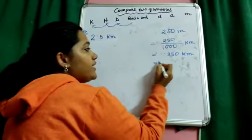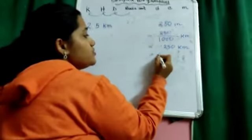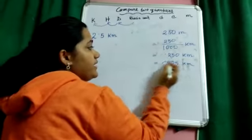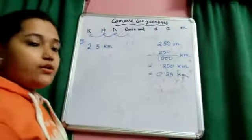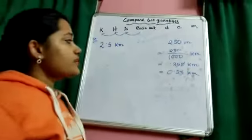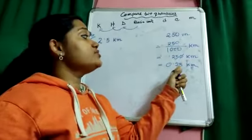Or, we can write it down, this last zero we can drop, so 0.25 kilometer using the concept of equivalent decimal.